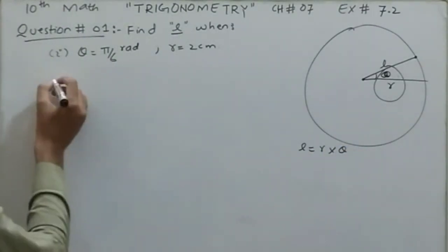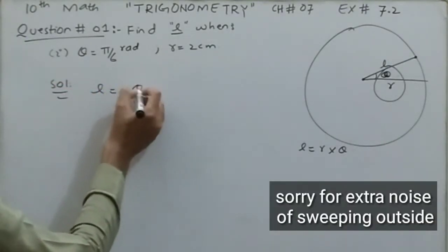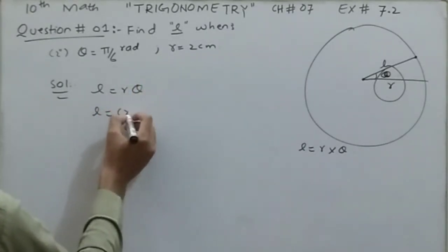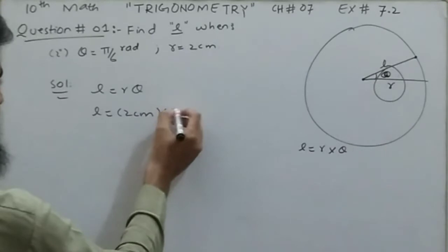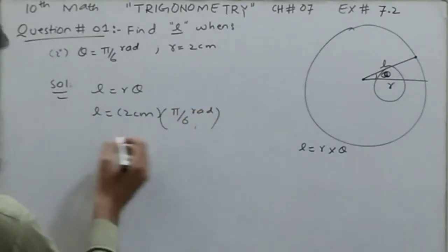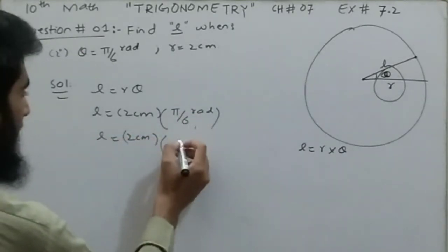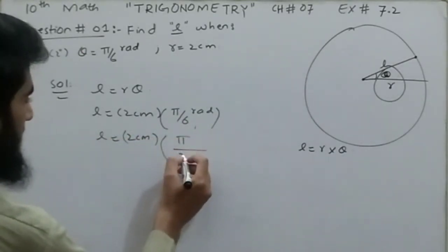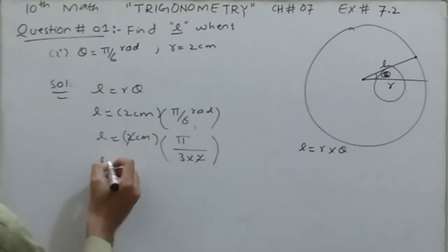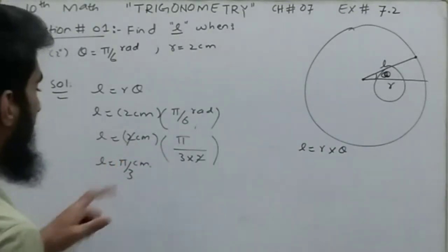So using this formula, we will solve exercise 7.2. For part one, solution: using the formula l = r·θ, l will be equal to r, which is 2 centimeters, multiplied by theta, which is π/6 radian. By simplification it becomes 2 centimeters × π/6. Since 6 can be written as 3 × 2, the twos cancel and we are left with l = π/3 centimeters.